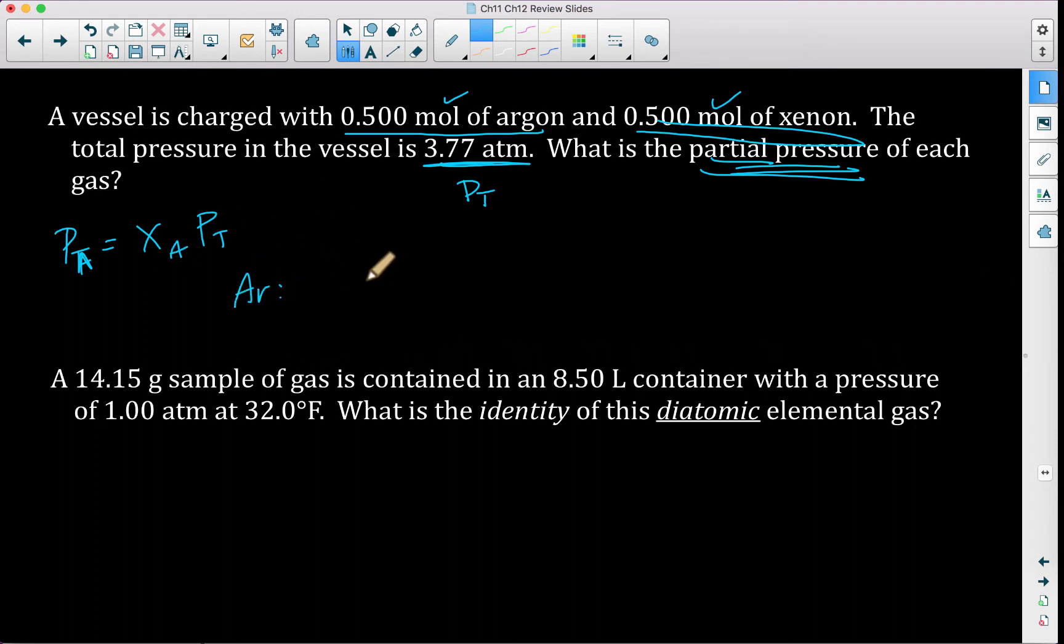So let's go ahead and do argon first. For argon, moles of the piece over moles of the whole, the sum, which would be one. So that means my argon is 0.5 is my mole fraction. So the pressure of argon is equal to one-half of 3.77 atmospheres, which means that the pressure of argon is equal to 1.89 atmospheres, which coincidentally, what's the mole fraction of xenon? Pressure of xenon is also equal to 1.89 atmospheres because they make up an equal portion.